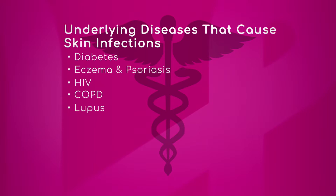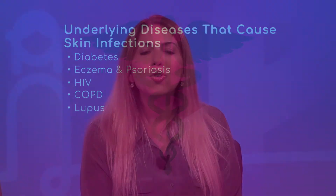And then COPD — obviously there's poor circulation with these patients, so the level of oxygen in the skin diminishes, causing the skin to break down and lead to bacterial and viral infections. As well as lupus — lupus is an autoimmune disorder where your own body attacks its cells, its organs, and its tissues, and this predisposes most commonly in lupus patients to viral infections such as Epstein-Barr virus and cytomegalovirus.